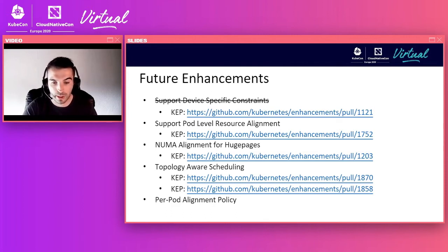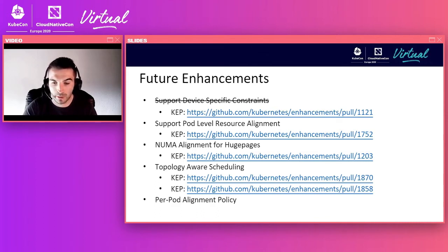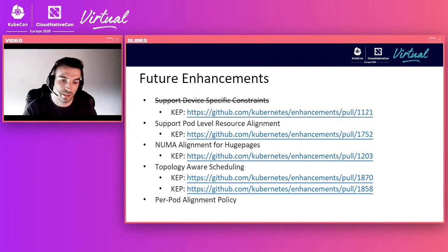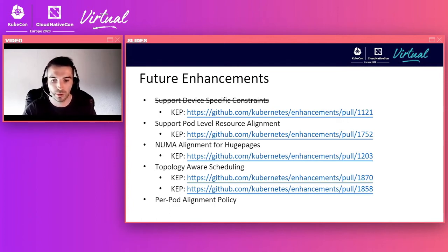First, support for device-specific constraints, part of the 1.19 release. This is an enhancement to the device plugin API that allows device plugins to indicate a list of preferred allocations, taking into account any internal topology constraints on the device. This information can then be incorporated into the ultimate allocation decision, extending Topology Manager beyond simply NUMA node affinity.